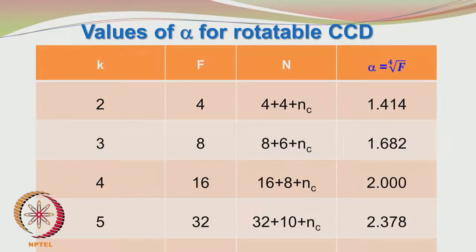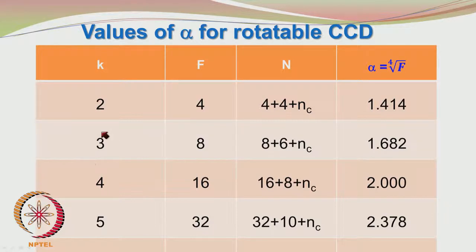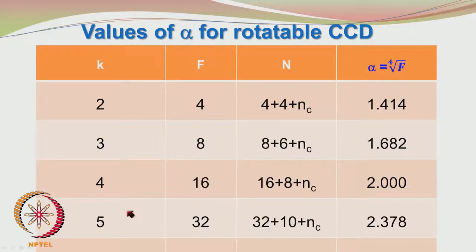Now let us see the values of alpha for a rotatable central composite design. For k equal to 2 with 4 factorial points, the total design points are 4 + 4 + Nc, and α = fourth root of 4 = 1.414. For k equal to 3, α = 1.682 as we just saw. For k equal to 4, f = 16 and α = fourth root of 16 = 2. For k equal to 5, f = 32, total points = 32 + 10 + Nc, and α = 2.378.